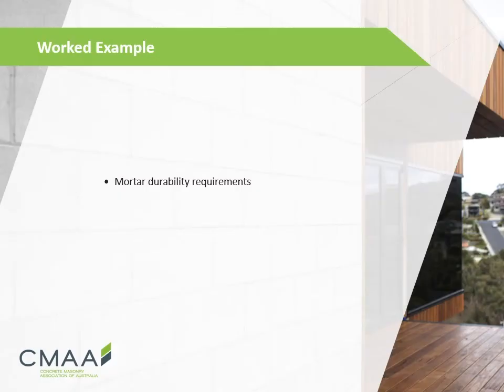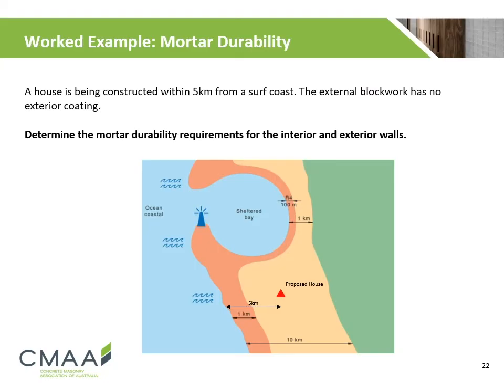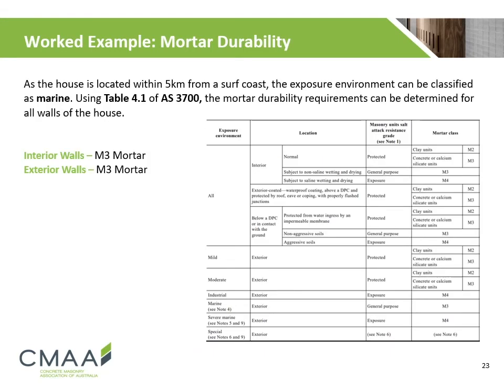We will now go through a worked example on how to determine the durability class of mortar for a building. A house is being constructed within 5km from a surf coast. The external block work has no exterior coating. Determine the mortar durability requirements for the interior and exterior walls. As the house is located within 5km from a surf coast, the exposure environment can be classified as marine. Using Table 4.1 of AS3700, the mortar durability requirements can be determined for all walls of the house.